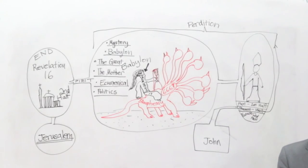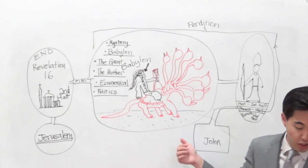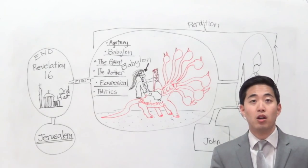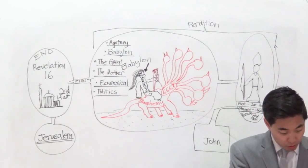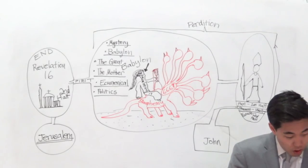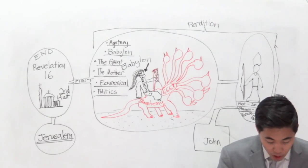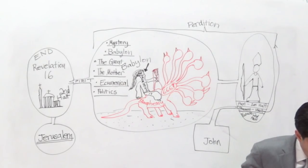If he went to perdition that time, go to 2 Thessalonians 2. Keep your hand at Revelation 17 and let's go to 2 Thessalonians 2. I got to be quick here because there are more juicy ones I got to show you.